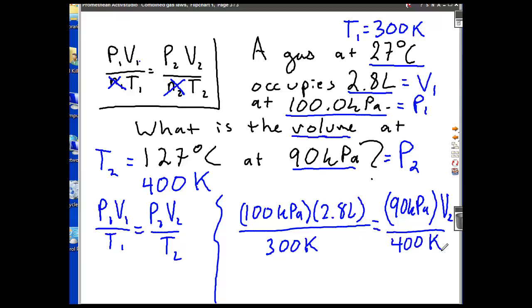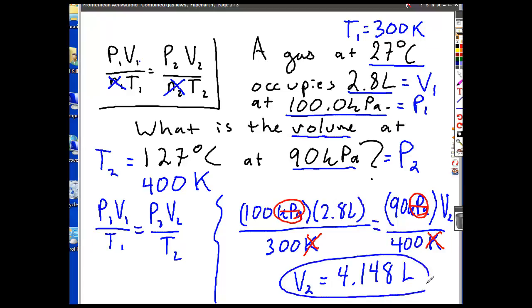Now, there's a bunch of different ways I can solve this, but what do I get when I ultimately solve it? V2 is equal to what? 4.148. What's the unit? Notice what units cancel out, guys. Kelvin cancels out. kPa cancels out. What unit's left? Liters. So, just pay attention to that.